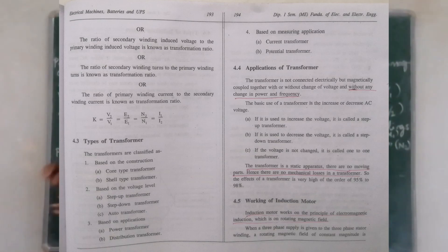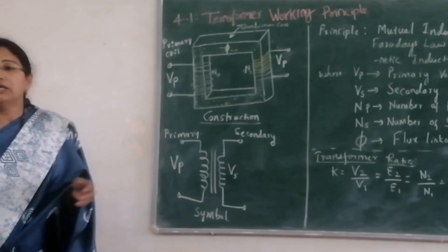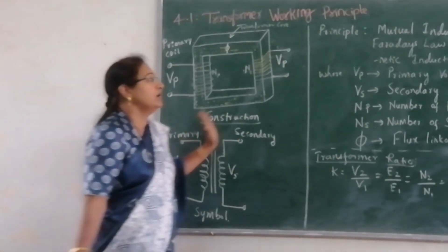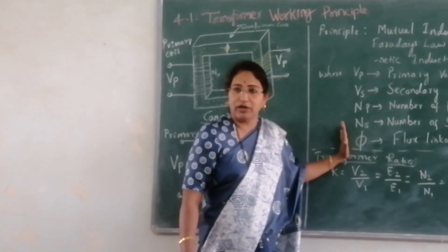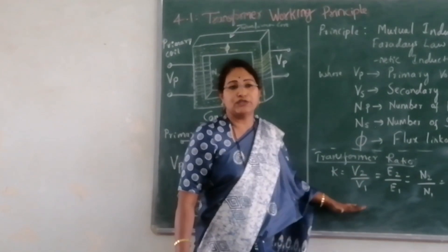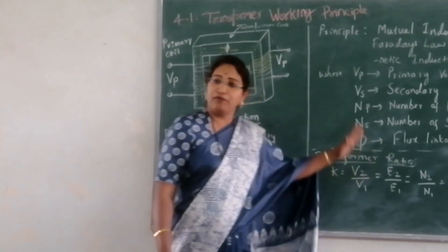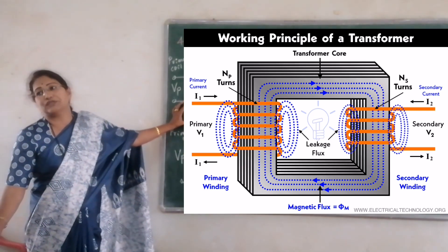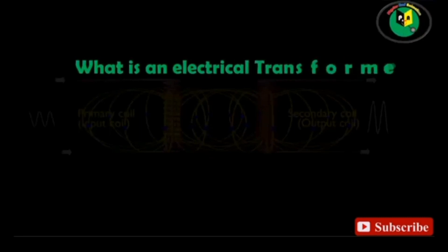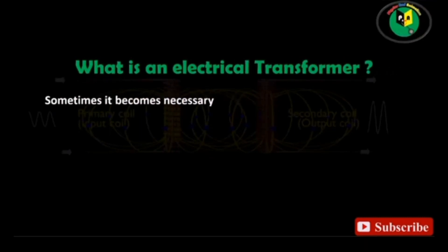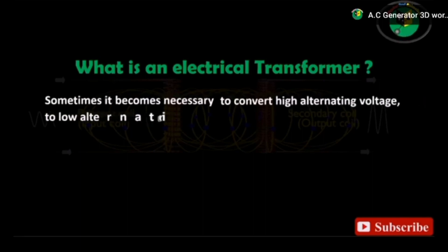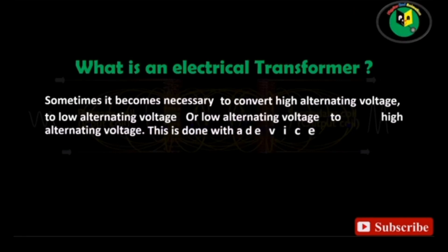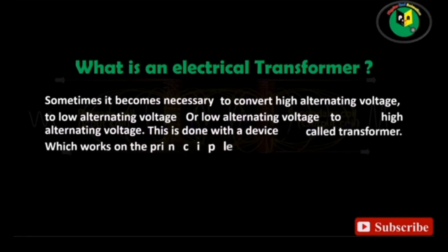You can observe here — it is given in the book, page number 192. The construction is given. With respect to construction, the symbol is taken, then the different terms which come in the transformer are noted, and the transformer turns ratio is also given. So first let us understand the construction and working principle: what is an electrical transformer? Sometimes it becomes necessary to convert high alternating voltage to low alternating voltage, or low alternating voltage to high alternating voltage. This is done with a device called a transformer, which works on the principle of mutual induction.